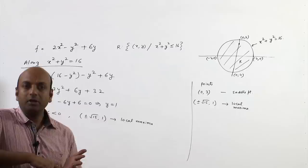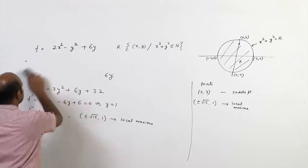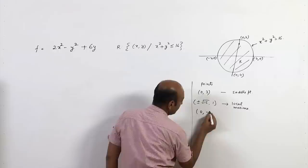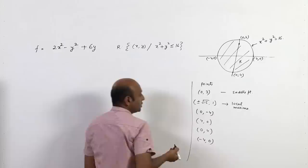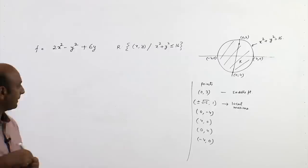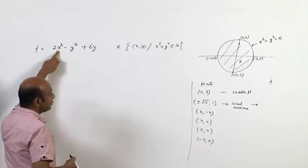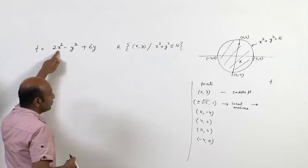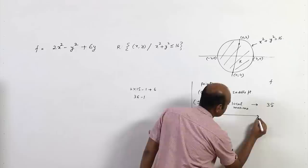We also evaluate f at the vertices where the circle intersects the axes: (0,-4), (4,0), (0,4), and (-4,0). At (±√15, 1): f = 2·15 - 1 + 6 = 35. At (0,-4): f = 0 - 16 - 24 = -40. At (4,0) and (-4,0): f = 32. At (0,4): f = -16 + 24 = 8.